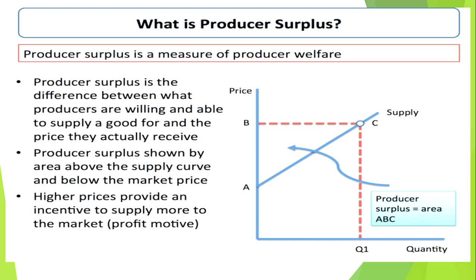Producer surplus के अंदर क्या होता — एक farmer होता है, उसने अपने farm पे जितना production किया, उस production का कुछ part तो वो अपनी family requirement के लिए रख लेता है और कुछ part वो market के अंदर sale कर सकता है — मतलब कि उसने sale किया नहीं, वो कर सकता है — वो होता है producer surplus in case of agriculture.